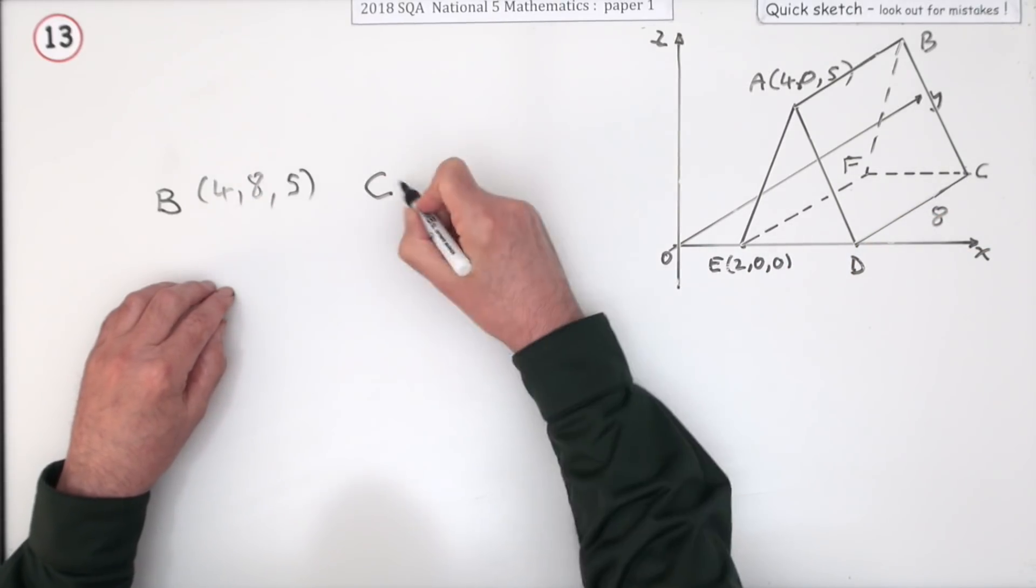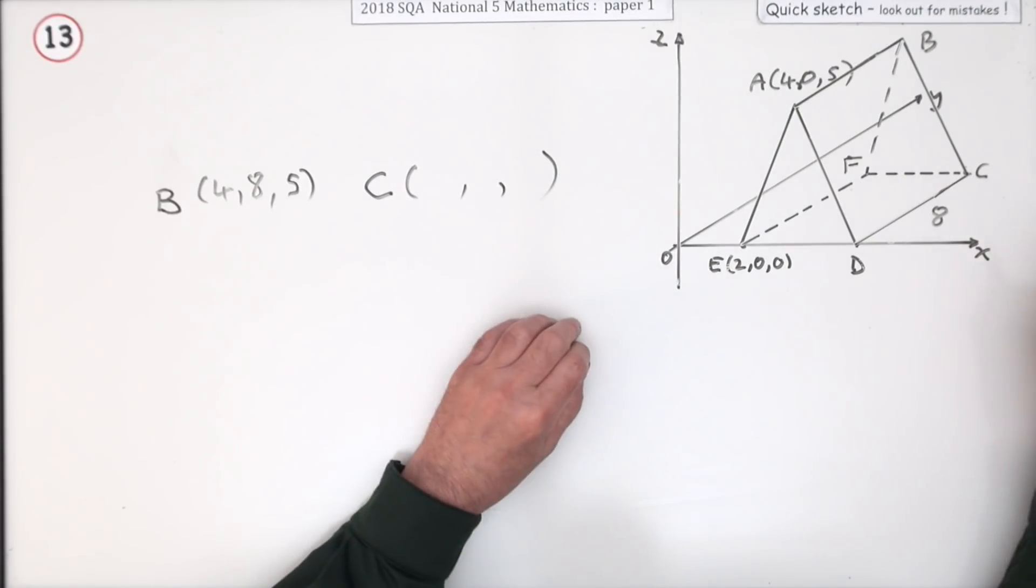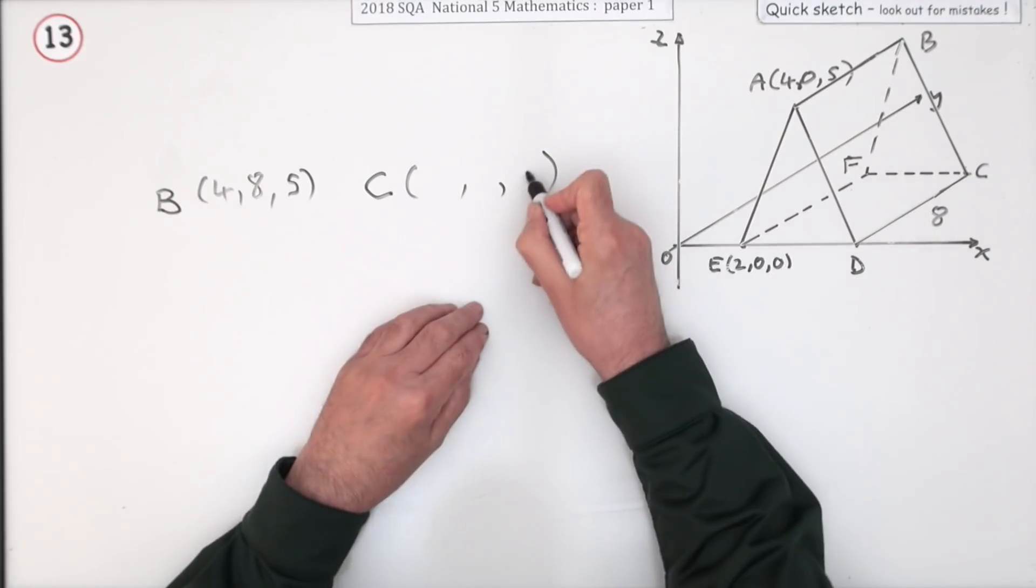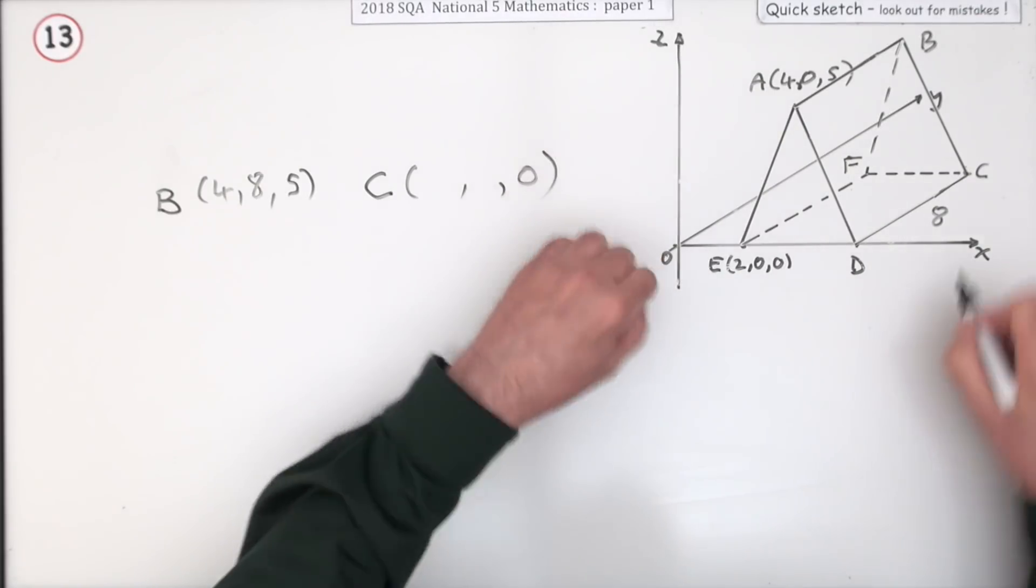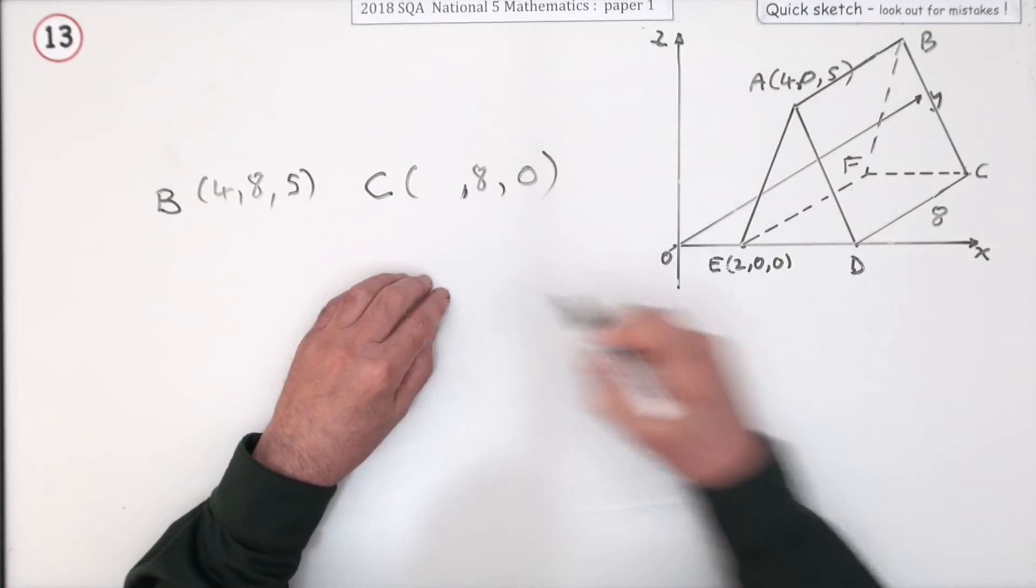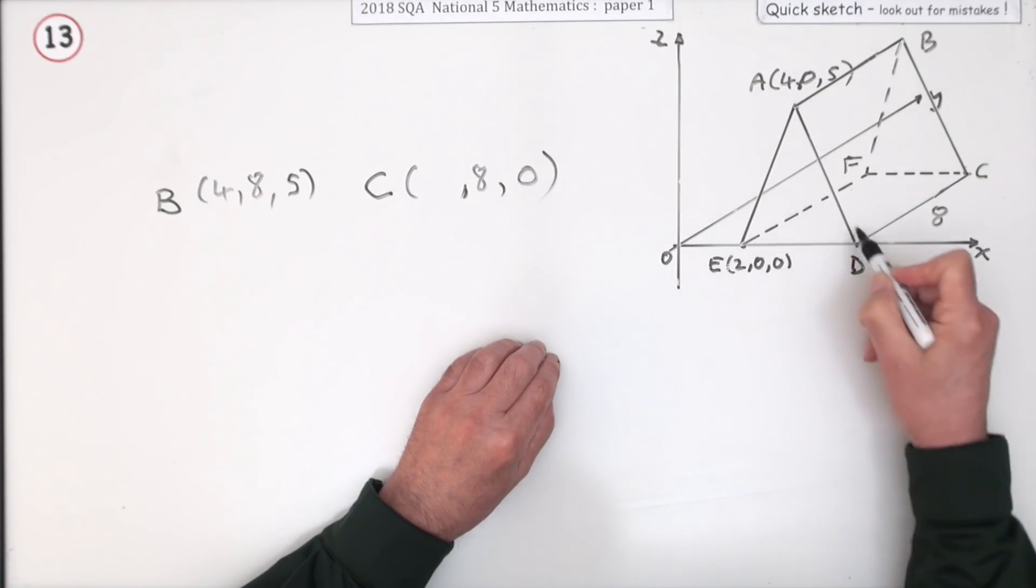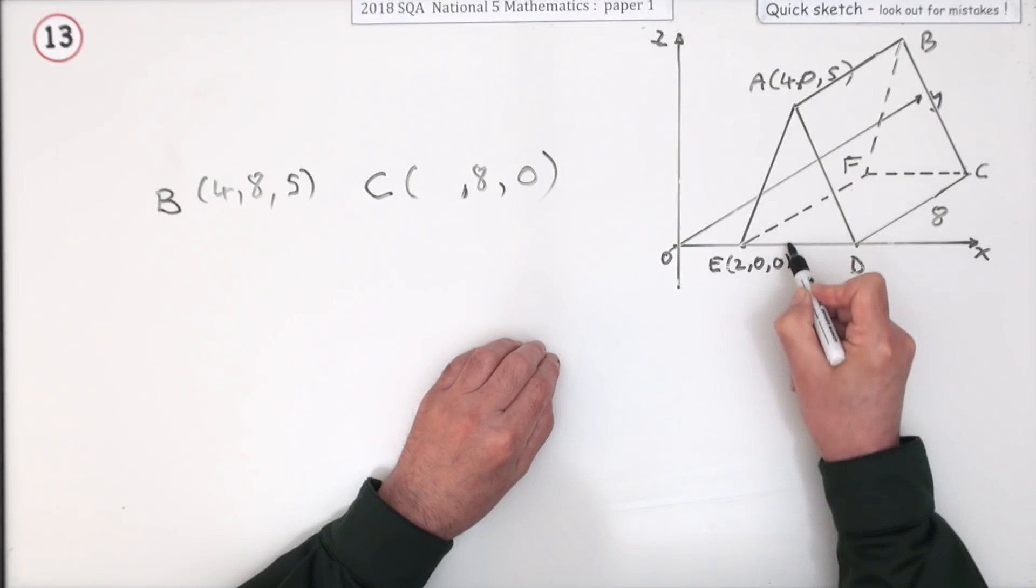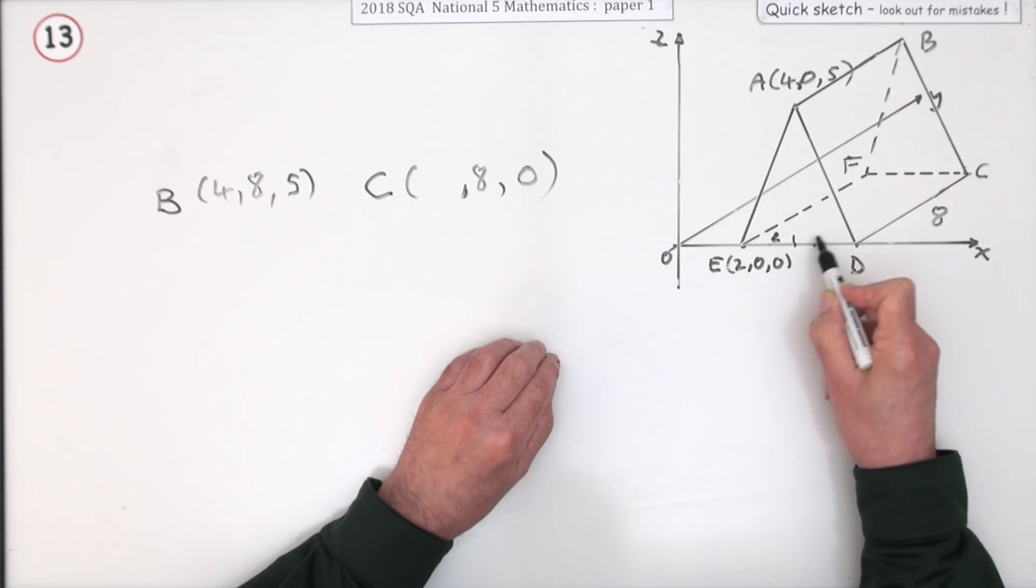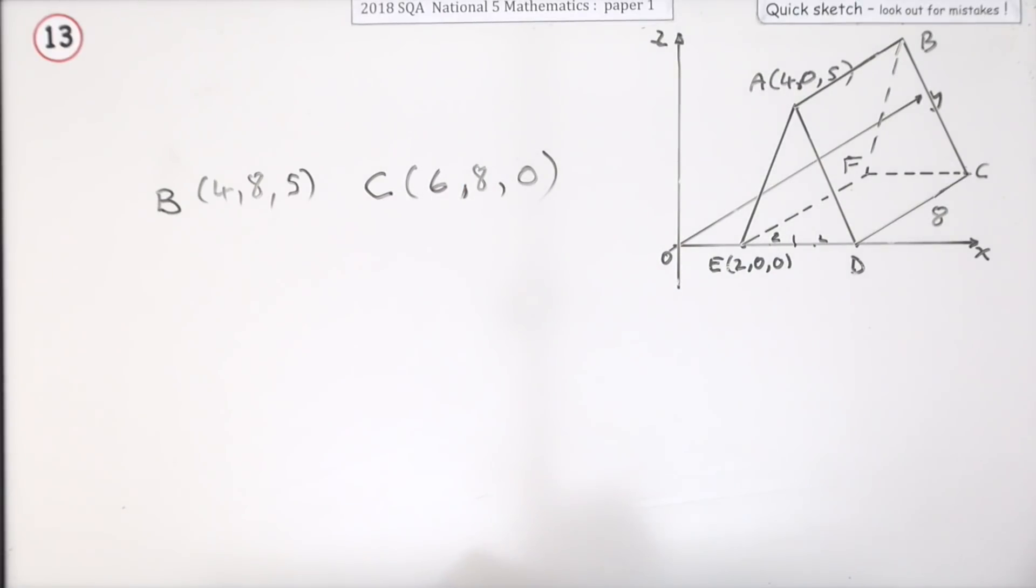Now what about C? Well C's at ground level so that's got a 0 for the z-coordinate, the height coordinate. You can see it's 8 back in the y direction. So that just leaves how far along is it. It's obviously more than 2. Well that's isosceles, so if you drop a perpendicular it would bisect the base, which means from 2 to the middle is 2, so that must be another 2 beyond that, taking it to 6. C must be the point 6, 8, 0.